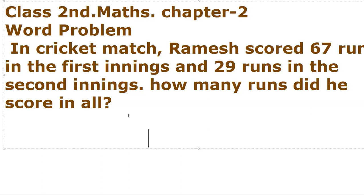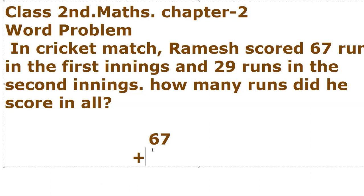So we add these 2-digit numbers. First is 67 and we have to find the total. So we have to do addition of 2-digit numbers to find the total runs. The second number is 29.